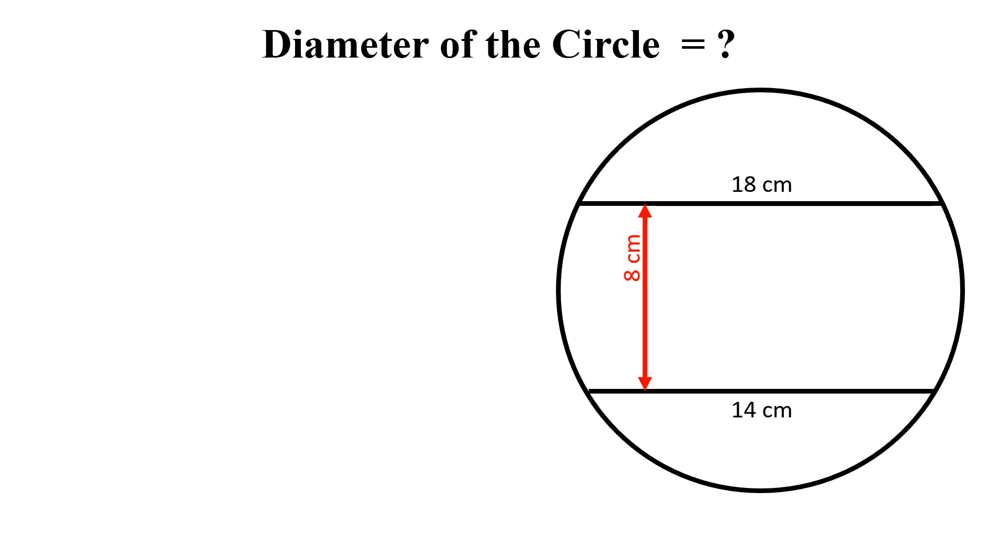Let's begin to solve the question. The question is, if the length of this line is 18 cm and the length of this line is 14 cm and the distance between these two lines is 8 cm, how to find the diameter of this circle?